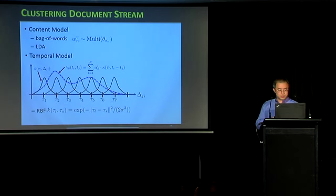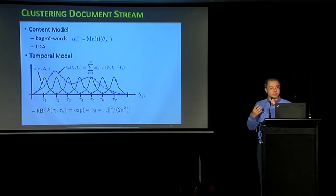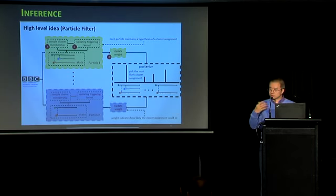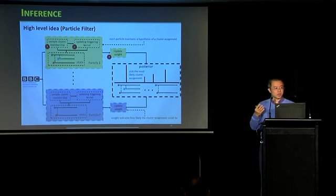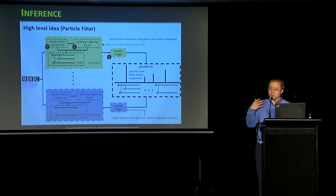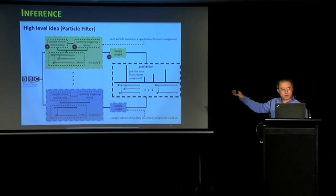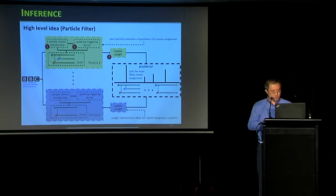For inference, the high-level idea is to use sequential Monte Carlo — particle filtering. When a document arrives, you draw many samples, resample the cluster membership of the new document, update the triggering kernel for that cluster, and update the particle weights. At the end, you can pick the particle with the highest weight and use it as your cluster parameter estimate.